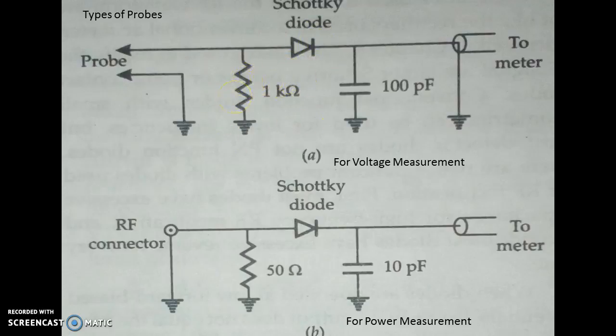This is one way of measuring voltage and power; the power measurement can be made in the range of nanowatts. Besides this, there are other methods of measuring power. Absorption power meters are the most commonly used. In these absorption-type power meters, there is a component that absorbs power and measurements are made based on the power absorbed by this element.